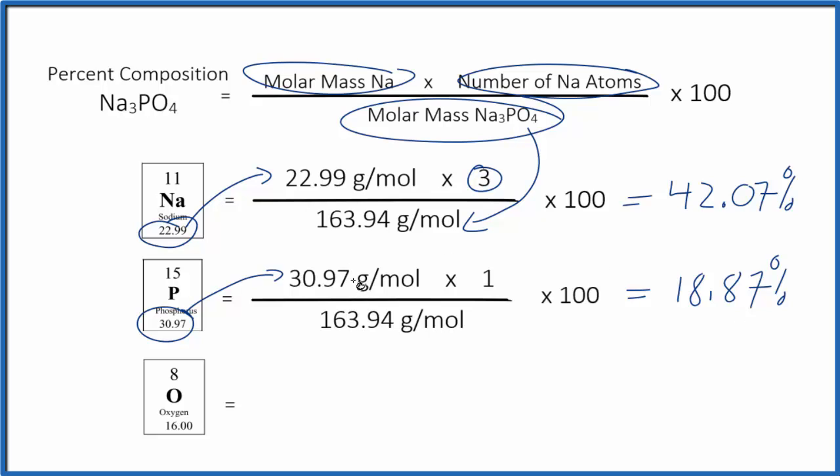Pause and try to find the percent composition by mass of the oxygen in Na3PO4. So again, we take the molar mass for the oxygen, the element we're interested in, multiply that by the number of oxygen atoms. We have 4 of those. We do the multiplication, get that number, divide by the molar mass of the entire compound.